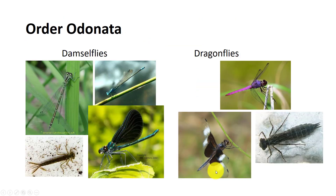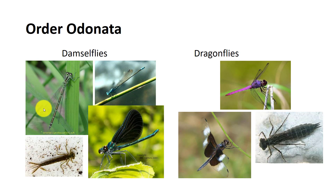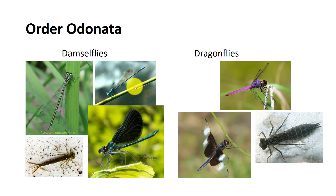In dragonflies, the rear wings have a broader base and are larger than the front pair. Damselflies, by contrast, have front and hind wings similar in shape, and as a result, they fly slower than dragonflies do. Also, dragonflies do not have hinges enabling them to fold their wings together when resting, though damselflies do.